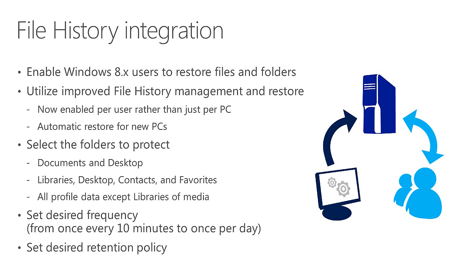As you use file history integration, you can select which folders to protect — the Documents folder, the Desktop, libraries, Contacts, Favorites, and so on. All typical profile data except media libraries are protected by default. You can also set the desired frequency, from once every 10 minutes to once a day, to control how often file history is captured. You can also set a retention policy — a longer retention policy consumes more disk space but gives you more flexibility in what you can recover from, while a shorter retention period takes less disk space but limits how far back you can go to recover an accidentally deleted or overwritten file.